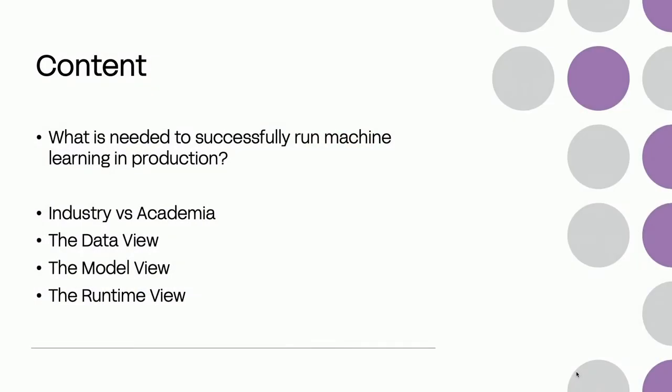The central question is: what is needed to successfully run machine learning in production? That starts with the differentiation between machine learning in industry and machine learning in production, because there is a huge difference. I see three very important areas to run a project successfully: the data view, the model view, and especially the runtime view — these three components are crucial.